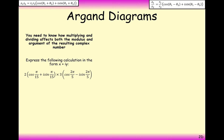Now let's look at this one: 2(cos π/15 + i sin π/15) times 3(cos 2π/5 − i sin 2π/5). Notice the negative here — that's a problem. You should not have a complex number with a negative between the cosine and sine parts; it should always be a plus. We need to manipulate this value so the second complex number has a plus in the middle.